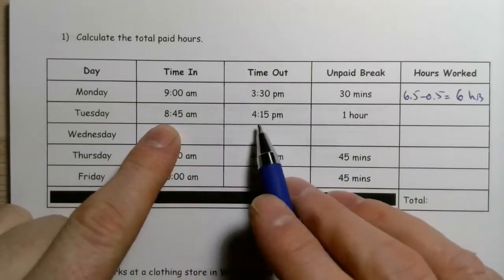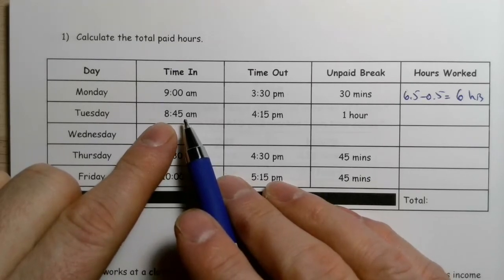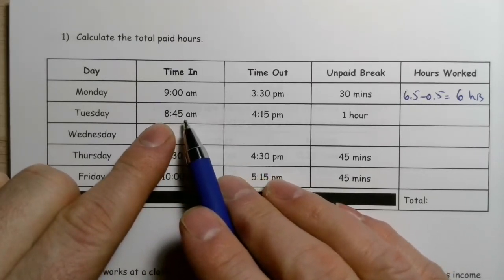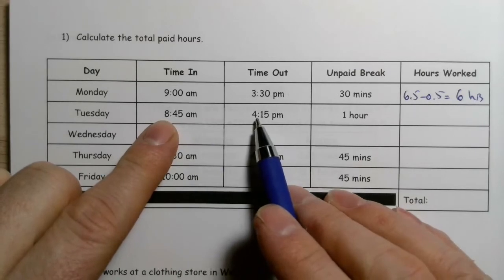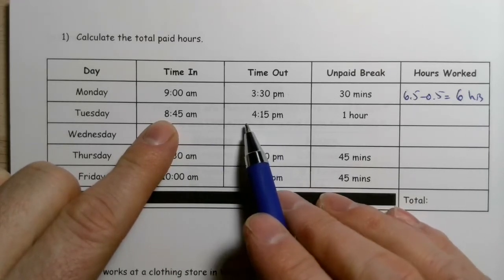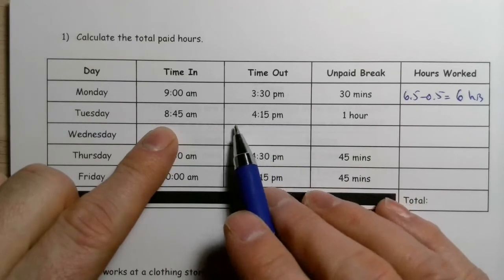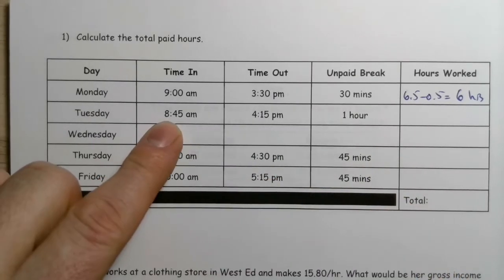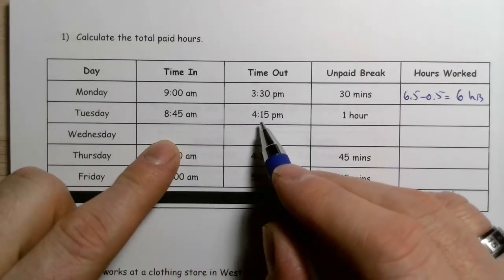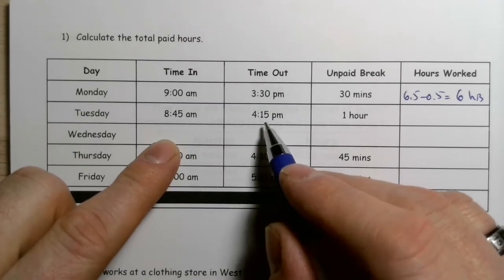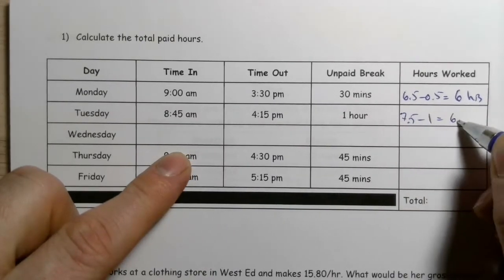Next, 8:45 to 4:15. From 8:45 to 12 is 3.25 hours, and then 12 to 4:15 is four and a quarter hours, so that's 7.5 hours total. With a one-hour unpaid break, 7.5 minus 1 gives us six and a half hours paid.